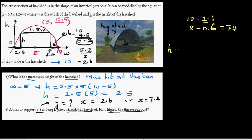H is given to be 0.5W times 10 minus W. You have to just put 2.6 into this equation. That will give you an answer. Let me show this on the calculator.